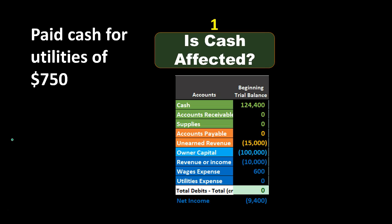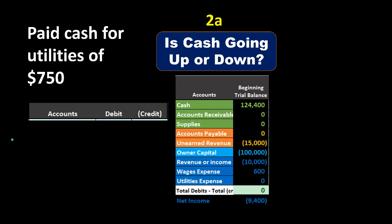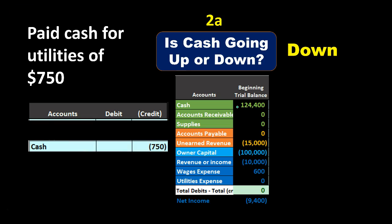Let's look at some examples. First: paid cash for utilities of $750. First question — is cash affected? Yes, 'paid' means we paid cash. So we write cash down. Next question: is cash going up or down? We paid it, so cash is going down. Now we apply our one rule: cash is a debit account, and to make it go down we do the opposite, which is a credit. So we credit cash. We can journalize that — the credit to cash goes on the bottom since we know there will be a debit on top, leaving room for it.